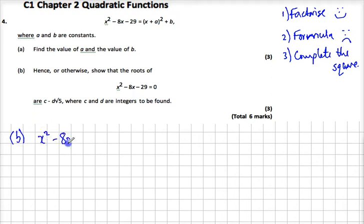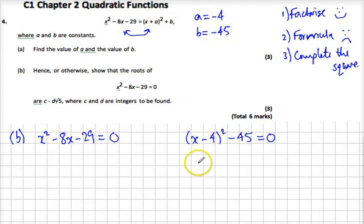But it's very convenient because part a, we actually already completed the square. We know that x² - 8x - 29, we want to solve that equal to 0. So why don't we just solve this instead? (x - 4)² - 45 = 0, because they're the same thing. This here, x² - 8x - 29, is (x - 4)² - 45. We've just shown that from here when a was -4 and b was -45. We've just done that for part a, so let's use that.